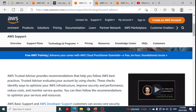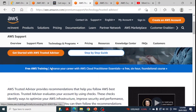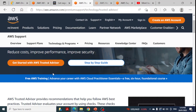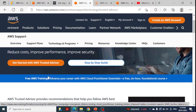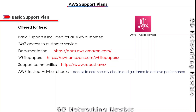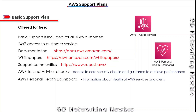Trusted Advisor evaluates your account using checks that identify ways to optimize your AWS infrastructure, improve security and performance, reduce cost, and monitor service quotas. However, with the Basic support plan we only have access to some of these checks, not all. In addition, we also have access to the AWS Personal Health Dashboard, which gives us information about the health of AWS services and alerts us if there is any disruption.